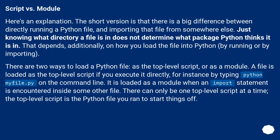There is a big difference between directly running a Python file and importing that file from somewhere else. Just knowing what directory a file is in does not determine what package Python thinks it is in — that depends on how you load the file. There are two ways: as the top-level script, or as a module. A file is the top-level script if you execute it directly, e.g. 'python myfile.py'. It is loaded as a module when an import statement is encountered. There can only be one top-level script at a time.